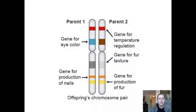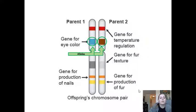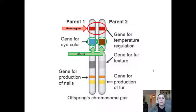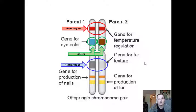Looking at a chromosome — we can say this is a dog's chromosome — on the left it received one copy from parent one, and the other side is parent two. Each individual line on these chromosomes represents an allele. When those two alleles are the same, you have a homozygous allele — the same copy from both parents. If you got different types of alleles from your parents, you have heterozygous alleles.